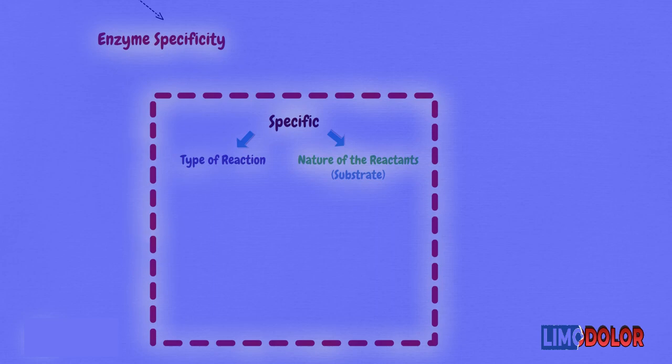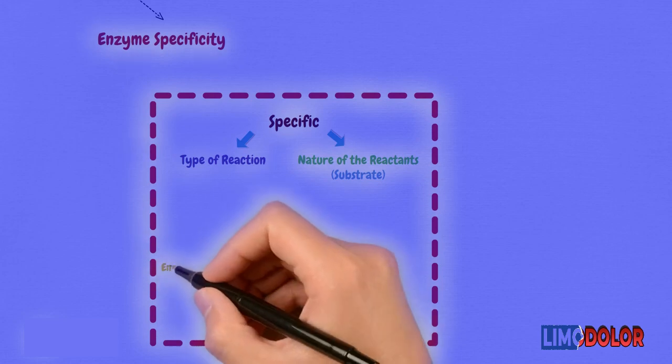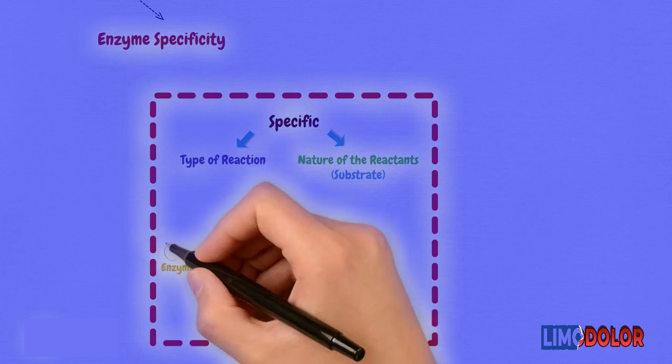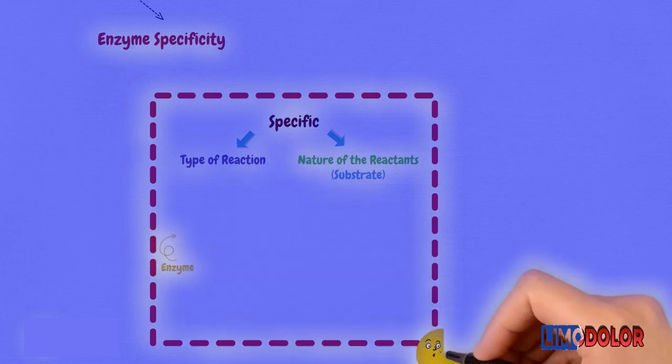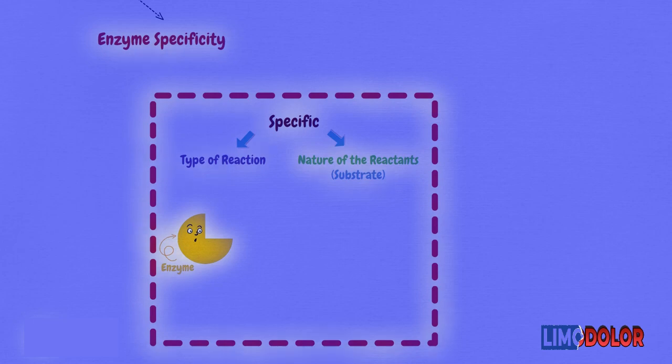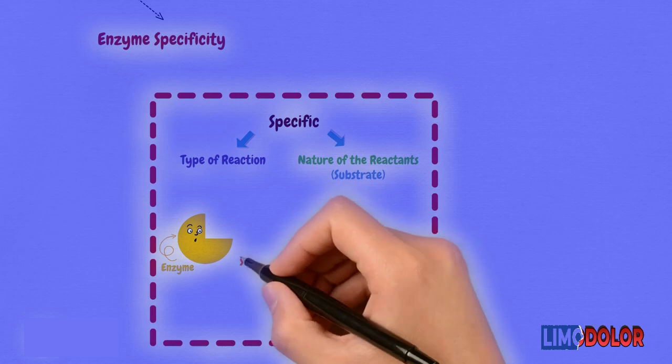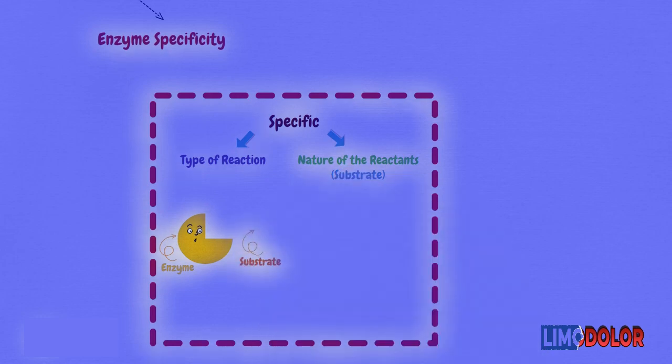This can more easily be understood by imagining the enzyme being a circle with a triangular shape cut out, similar to a pizza with a slice removed. The enzyme is specific in the same sense that the substrate must be the exact same size as the missing piece.